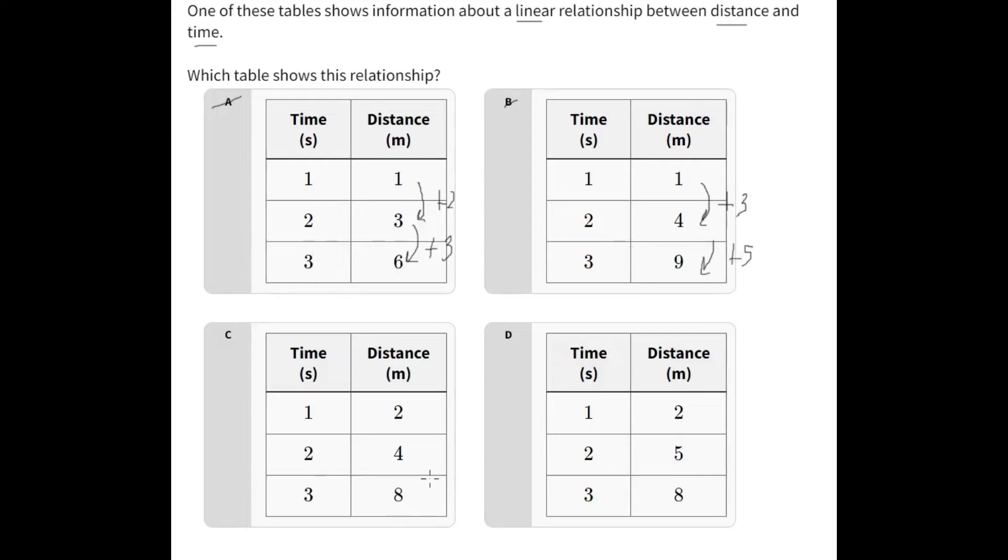For C, let's look at this. It's going up by 2, and then it's going up by 4. So this is not our answer either. Let's look at D here. D is going up by 3, and it's going up by 3 again. So this is our correct answer, because it's going up by 3, and it's going up by 3 again. So therefore, our answer is D.